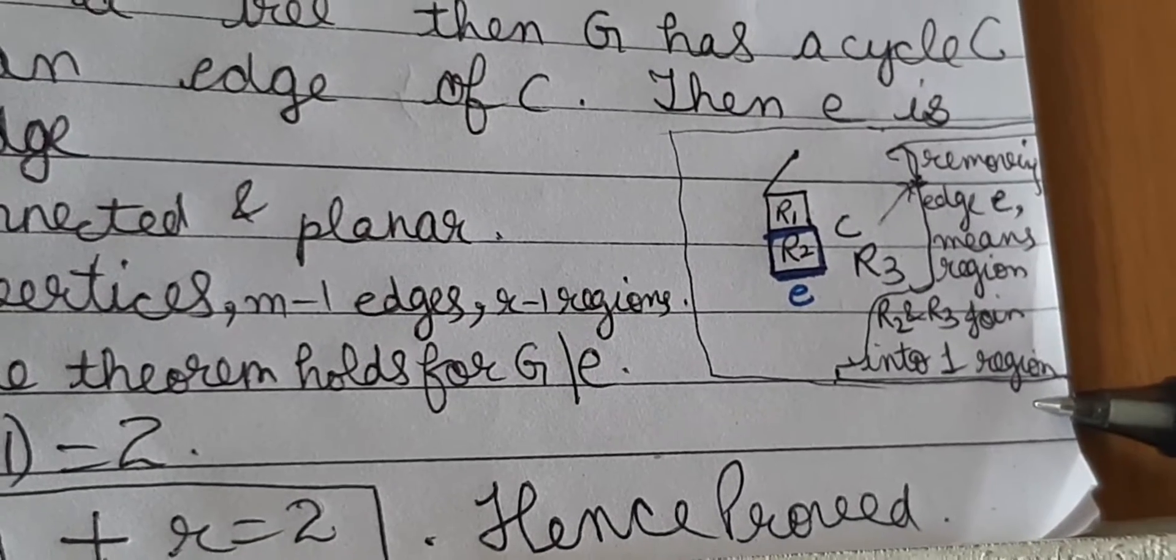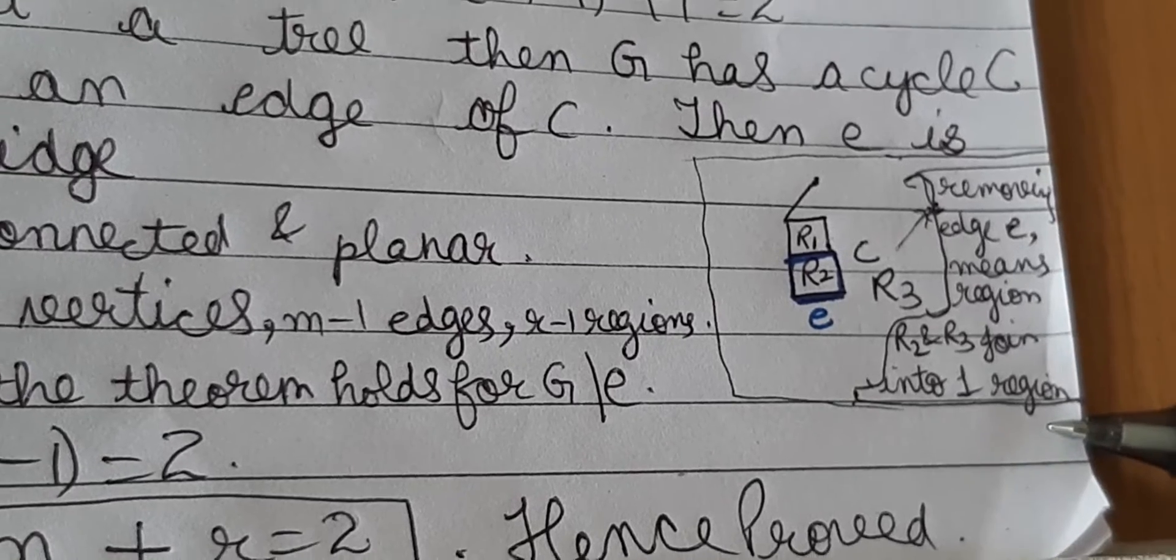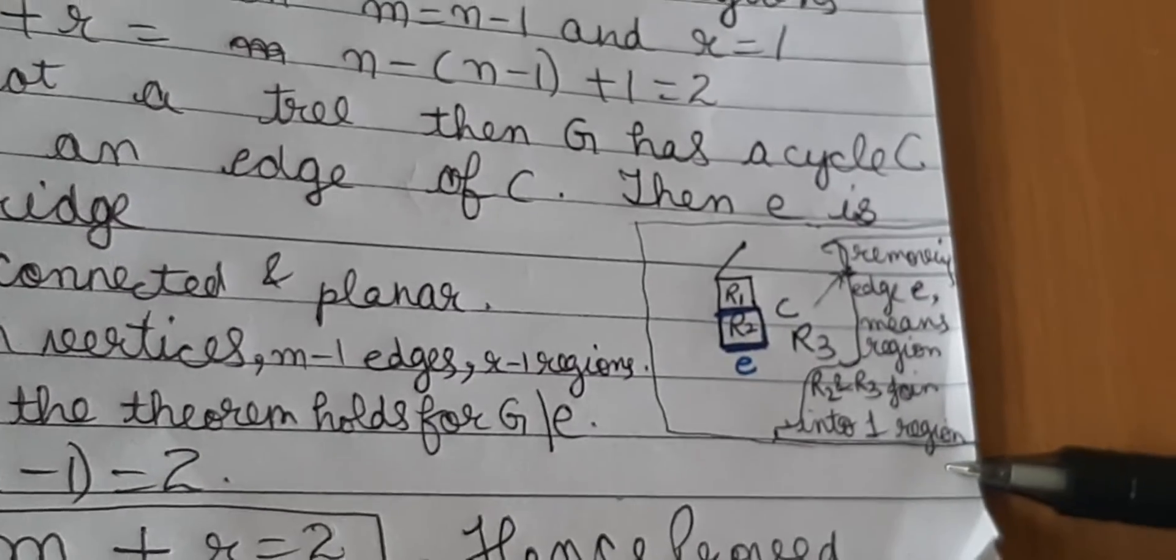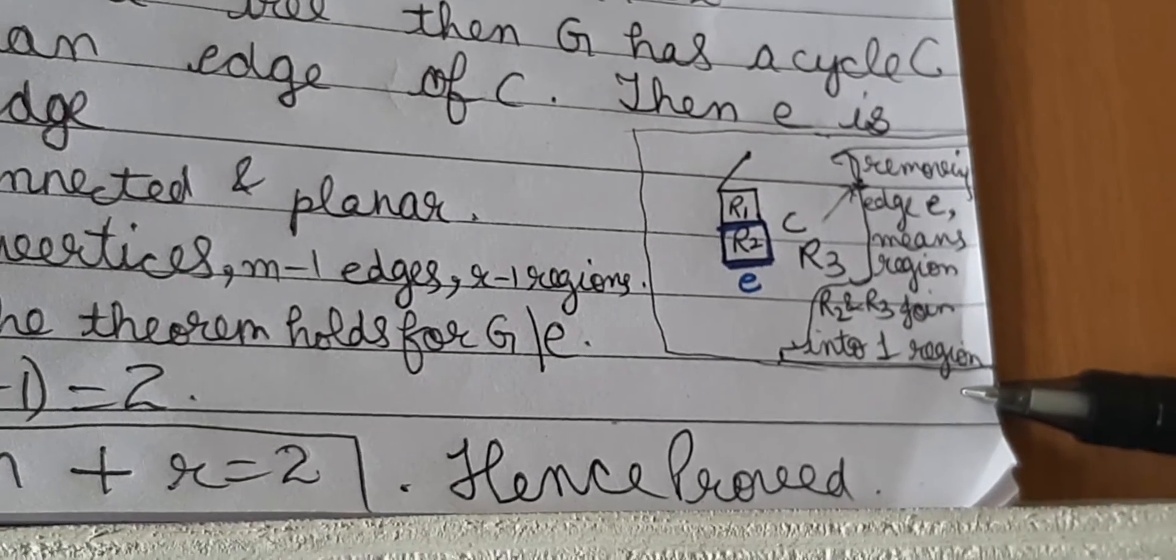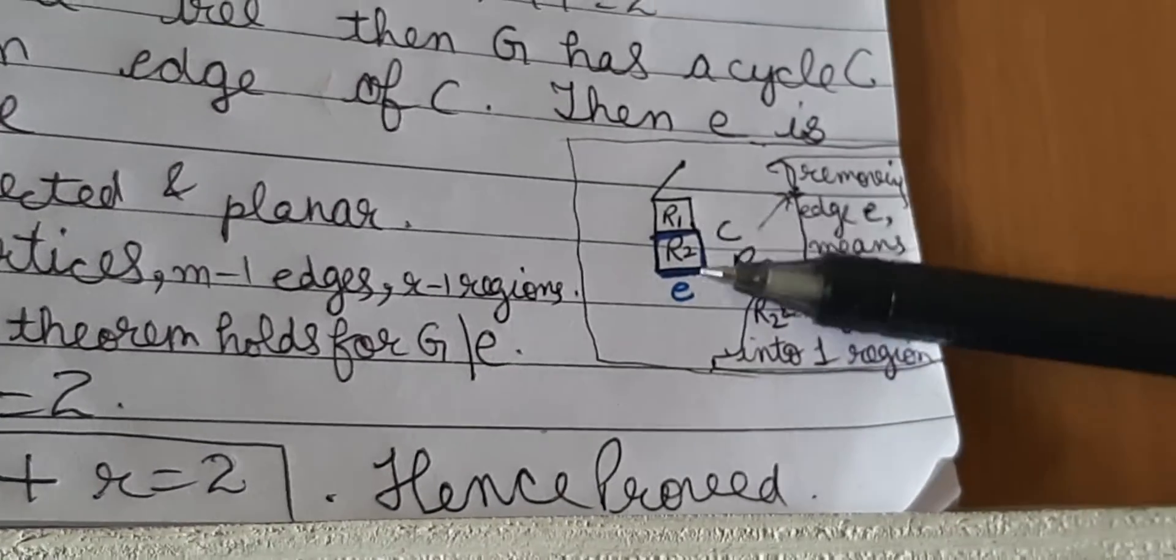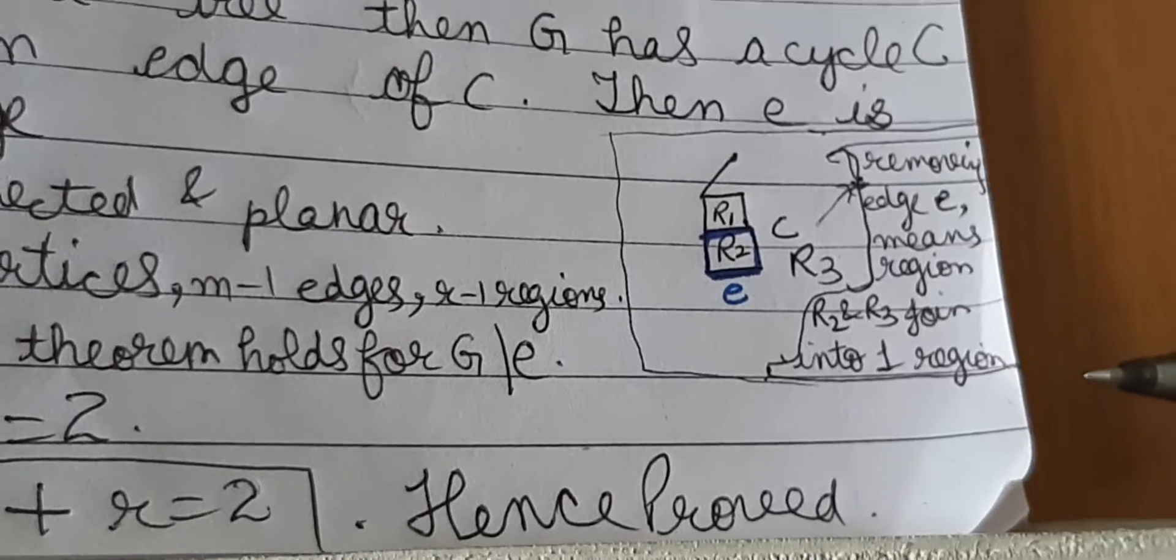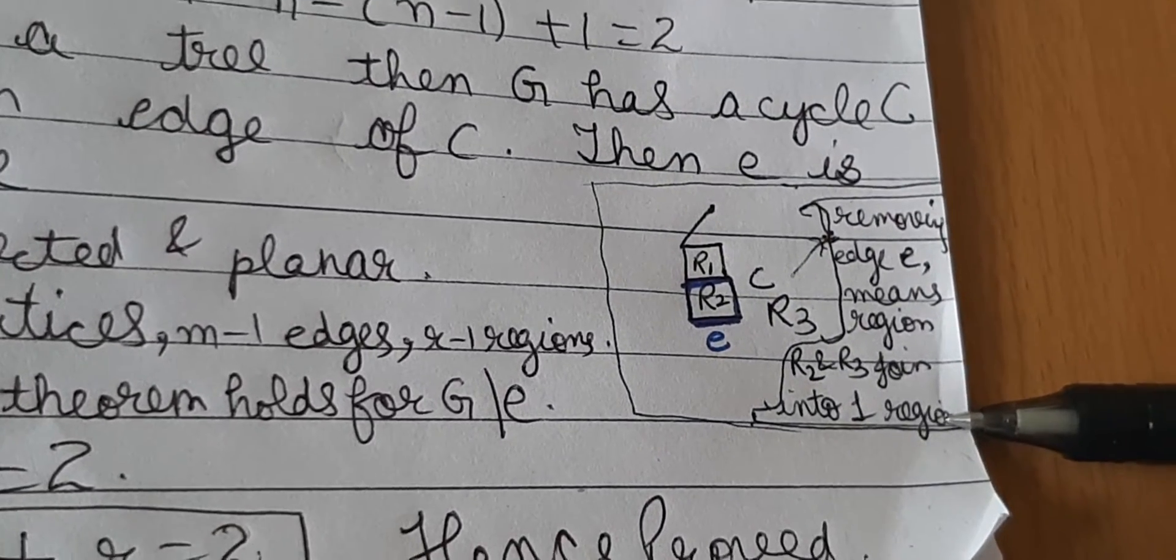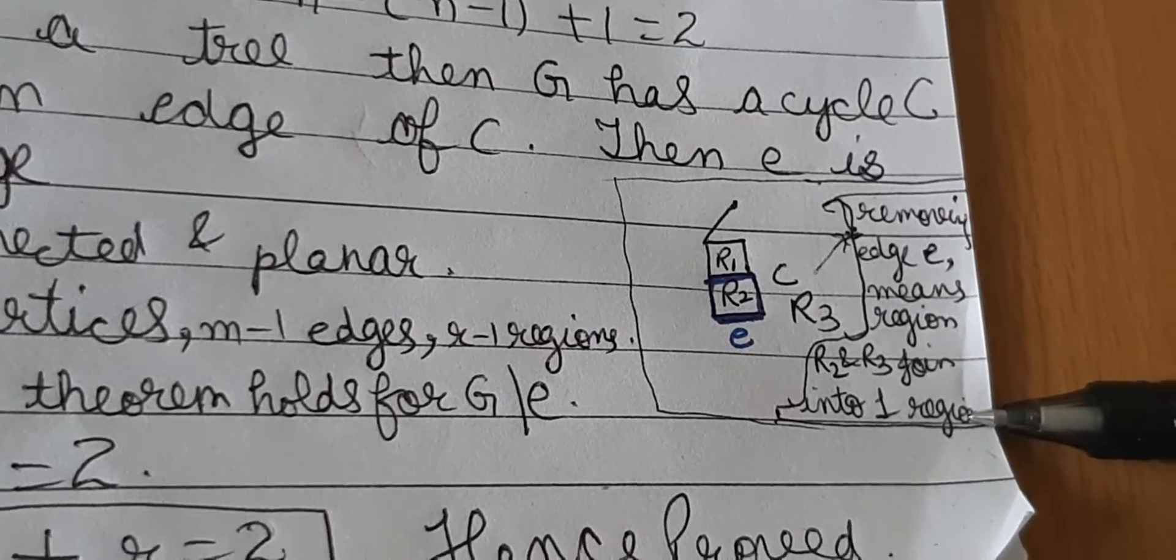Now notice if you remove an edge, the number of edges goes down or decreases by 1. Number of vertices remains the same. But look what happened to number of regions: removing edge e means that in this example R2 and R3 join into 1 region.